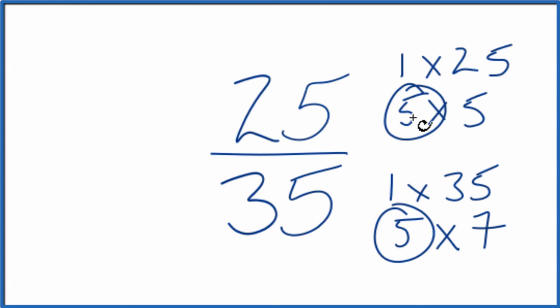So we'll divide 25 by five, 35 by five, and we'll have simplified 25 35ths. Let's move these over here.